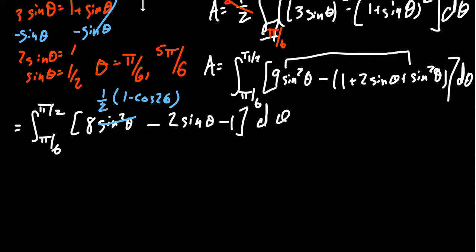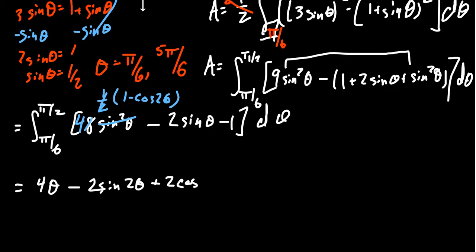Sine squared is not ideal for integration, so we replace it using the identity: sine squared theta equals one-half times (1 minus cosine 2 theta). The one-half cancels part of the 8, leaving a 4. Now we integrate: the antiderivative of 1 is theta, giving 4 theta. The antiderivative of negative cosine 2 theta is negative sine 2 theta divided by 2 from the chain rule, which combines with the 4 to give a coefficient of 2. The antiderivative of negative 2 sine theta is positive 2 cosine theta, and the antiderivative of negative 1 is negative theta.